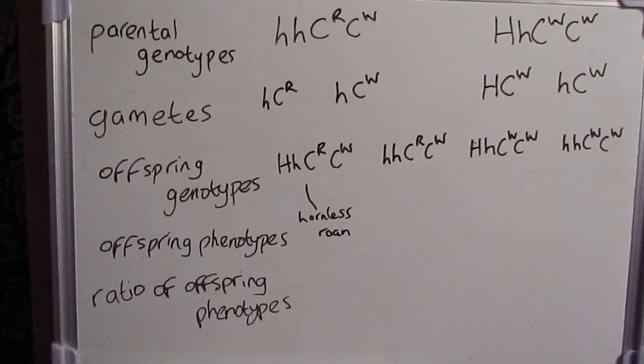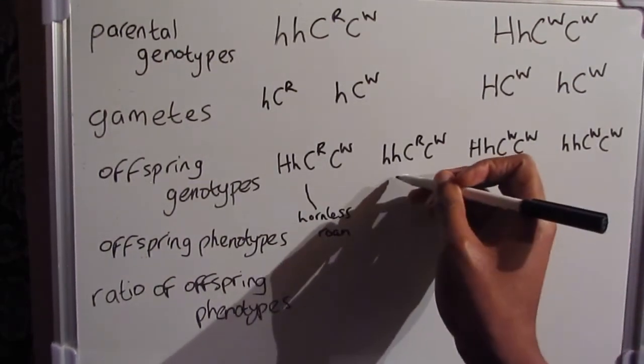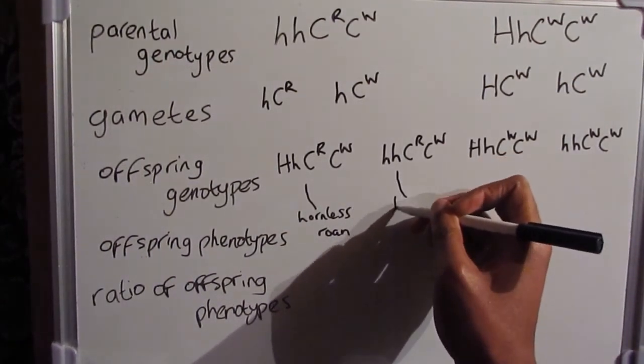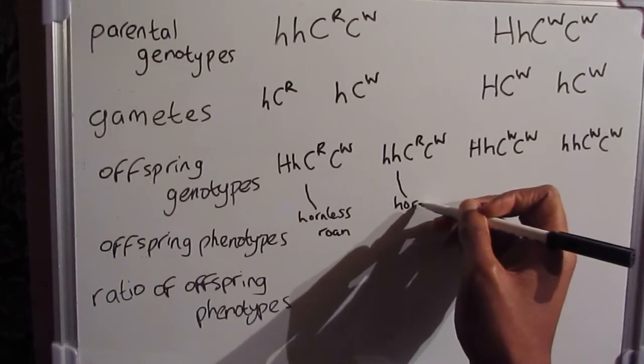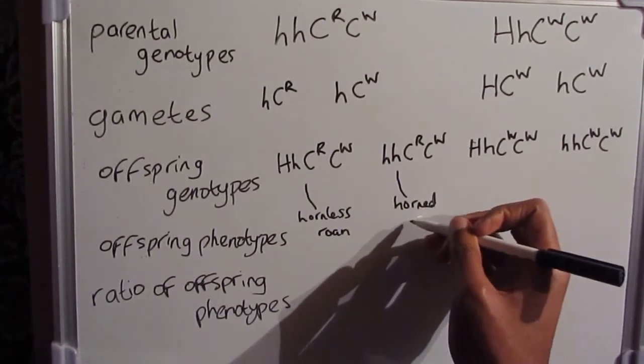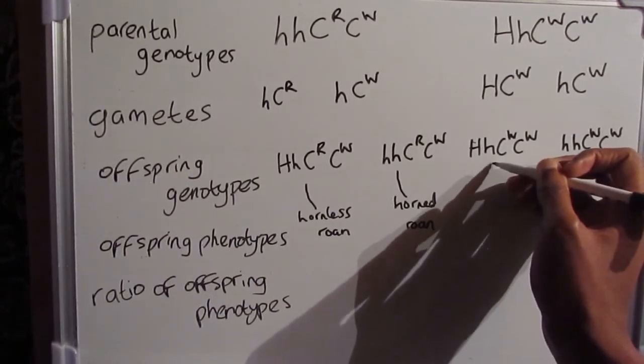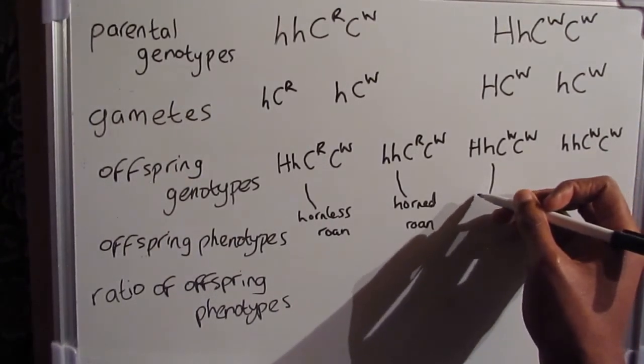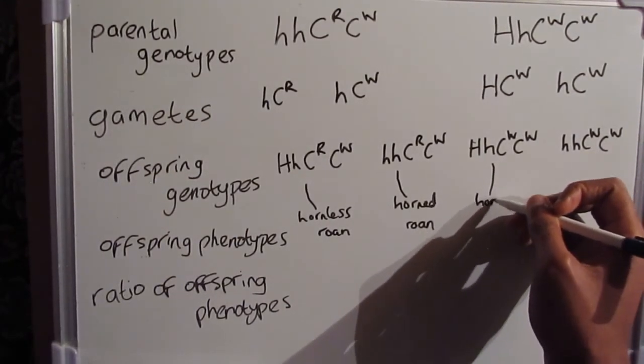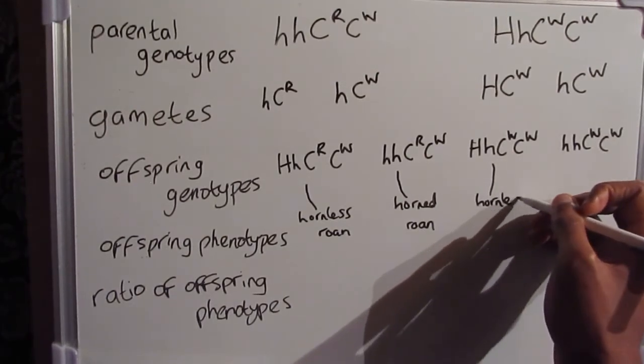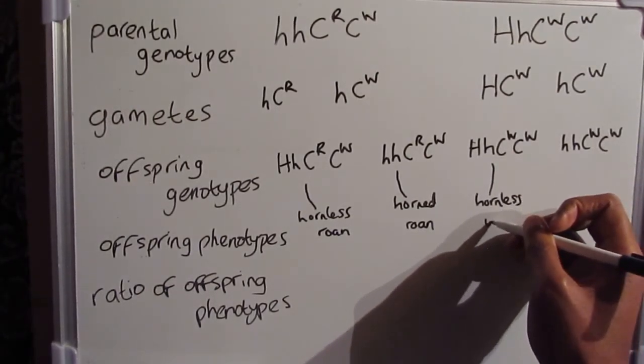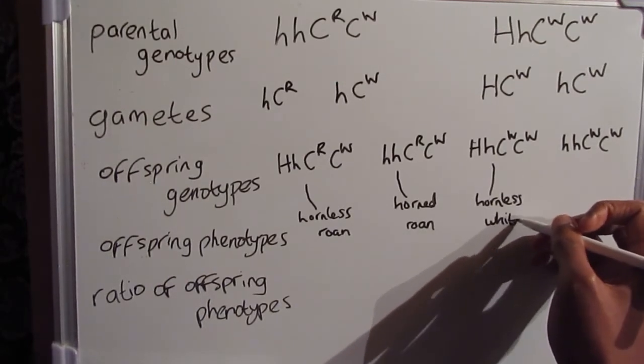The second one has homozygous recessive for our horned condition. So it's going to be horned by showing C superscript R, C superscript W. So it should be roan. So the second one will be horned roan. Our third genotype is heterozygous for our horned condition. So it should be hornless. But it's only Ws that we can see for our coat. So it needs to be white. So it should be hornless white.